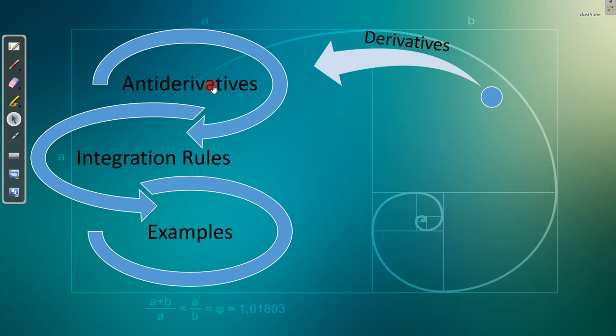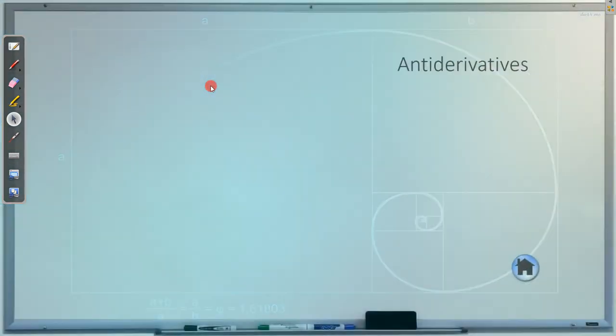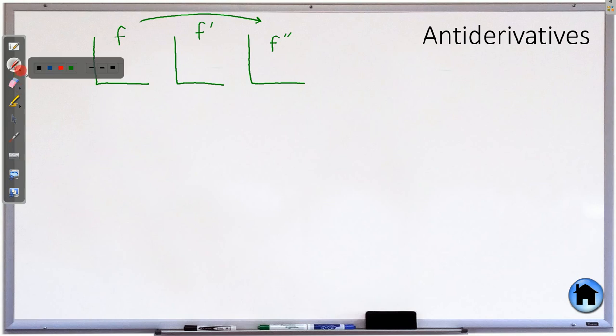Let's first try to wrap our mind around what an antiderivative actually is. First semester, we had our three graphs: F, F prime, and F double prime. And we mostly worked our way this way, we kept taking derivatives.